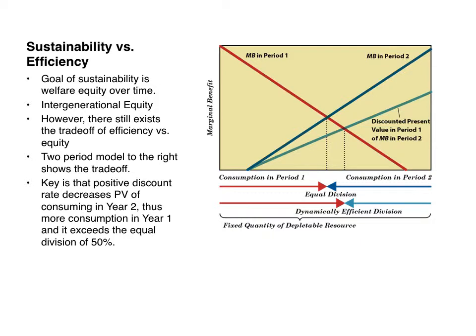In terms of efficiency, efficiency means more consumption in period one relative to period two. You can see the dynamically efficient division there — greater emphasis on period one relative to two. So generally, people will consume more today than they will tomorrow.